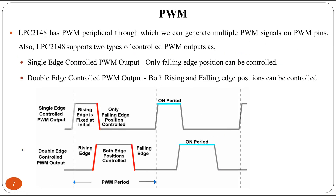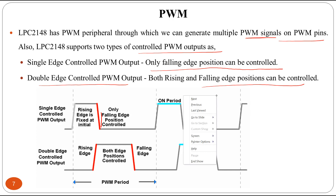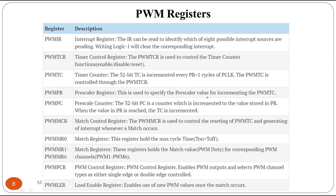In the LPC2148 we have a PWM peripheral through which we can generate multiple PWM signals on PWM pins. The LPC2148 supports two types of controlled PWM outputs. The first is single edge control PWM output, where only the falling edge position can be controlled. The second is double edge control PWM output, where both rising and falling edge positions can be controlled.